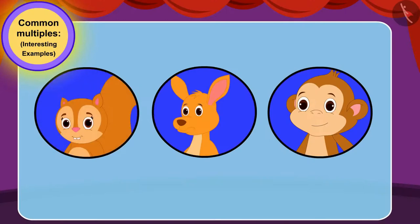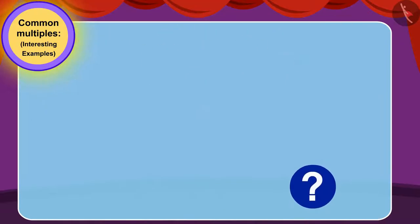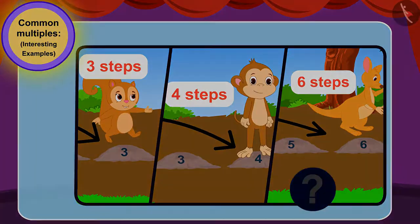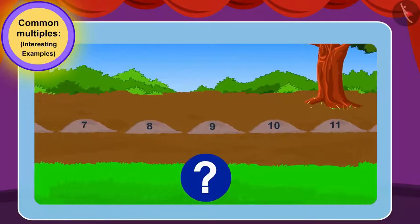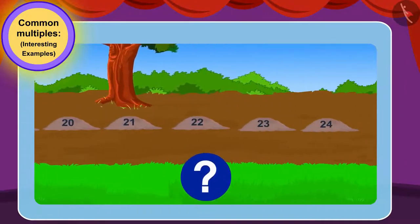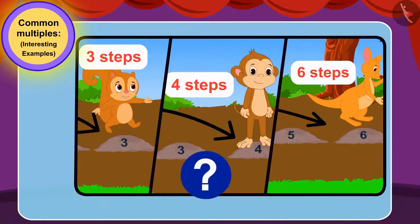Children, can you use common multiples to find out if all three will be able to cross the marsh? Let's see how we can find this. We have to first find out which stones the three friends will jump on. What will we do to find this, children?